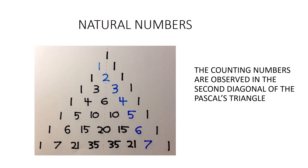The second property is natural numbers. The second diagonal of Pascal's Triangle represents the natural numbers, commonly known as the counting numbers. Since the structure follows bilateral symmetry, the second diagonal from the left side and the right side represent the natural numbers.